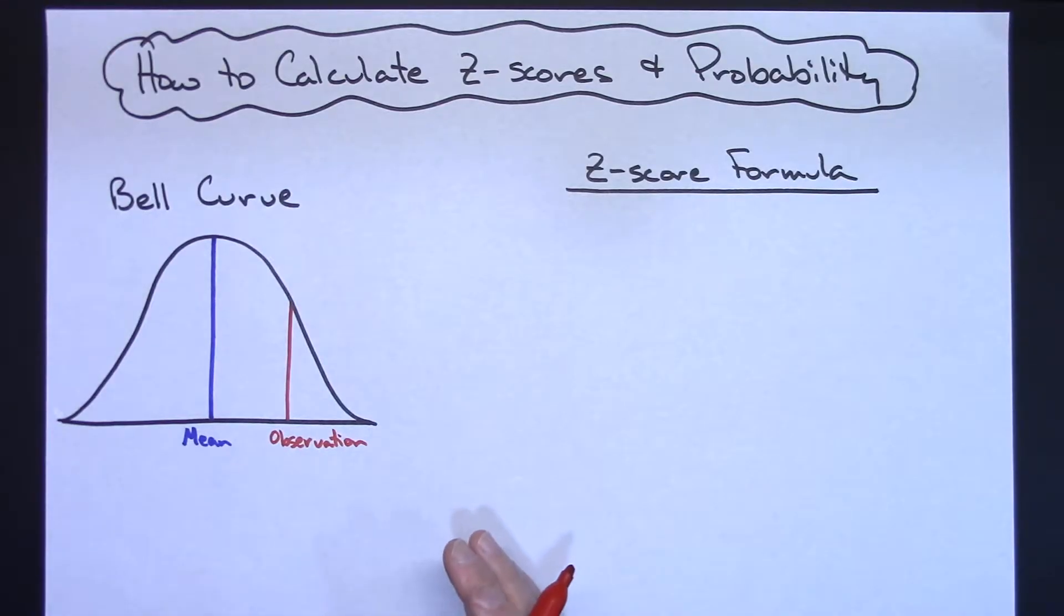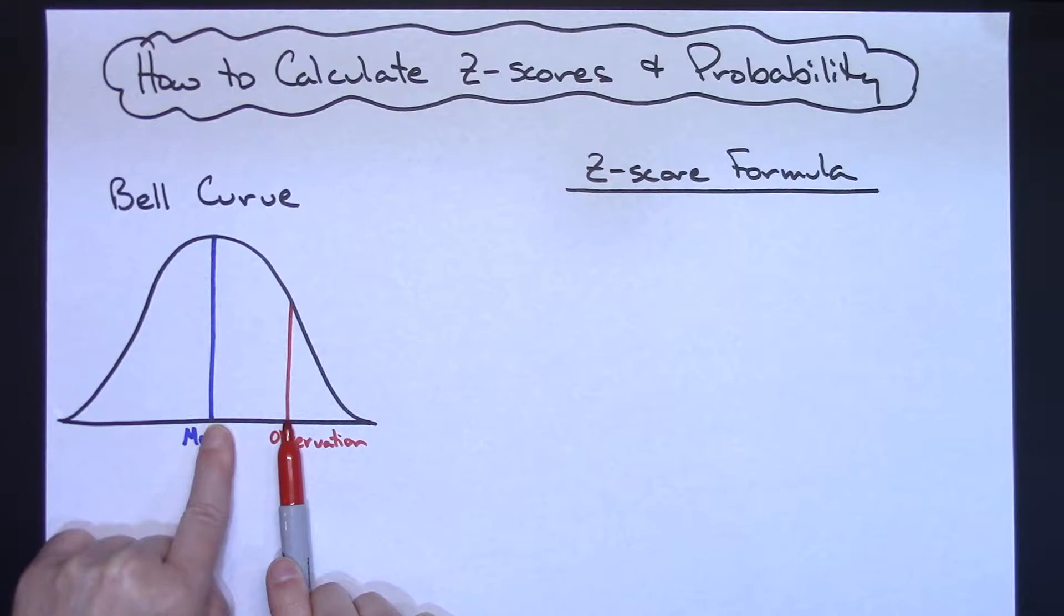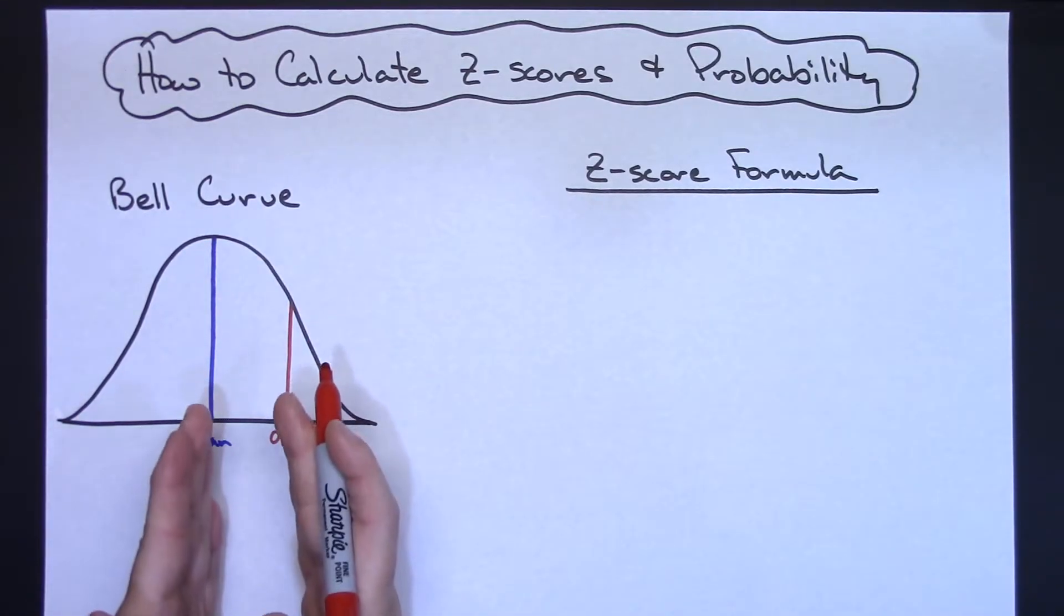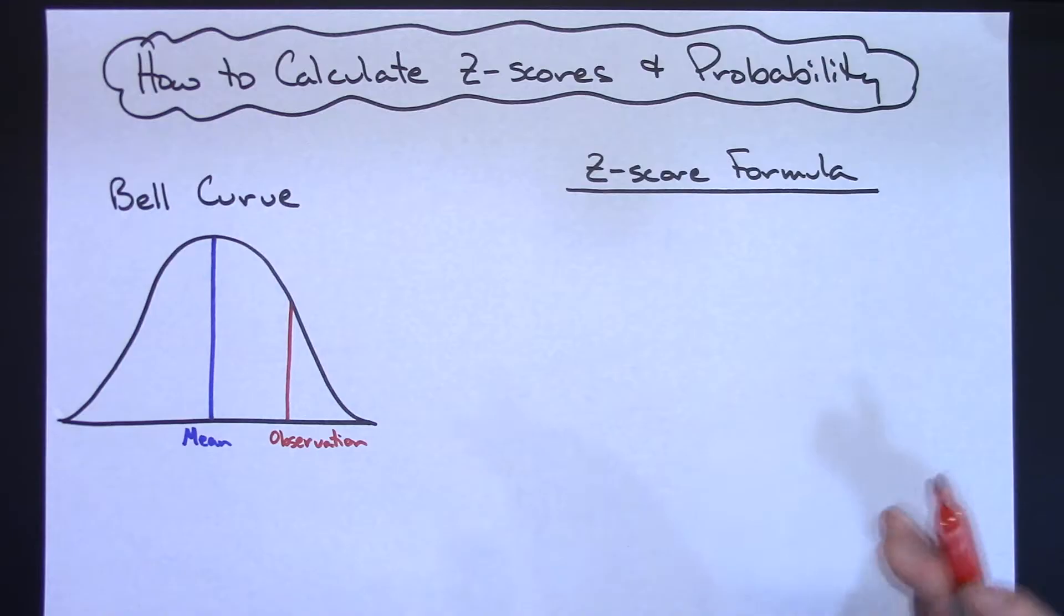Now, the whole idea of a z-score is a z-score measures the distance between the mean and your observation. That is what a z-score is, and it's measured in standard deviations.